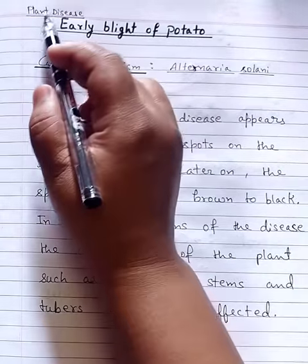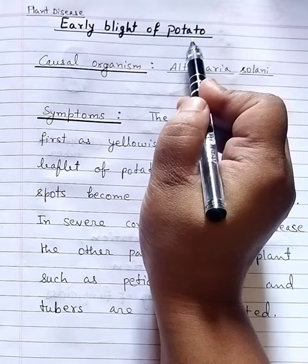Plant disease: early blight of potato. Causal organism: Alternaria solene.